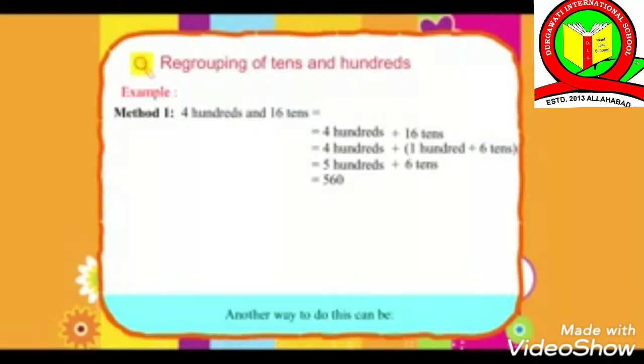Another way to do this can be Method 2. 4 hundreds and 16 tens equals 400 plus 160 equals 400 plus bracket 100 plus 60 close bracket equals 500 plus 60 equals 560.